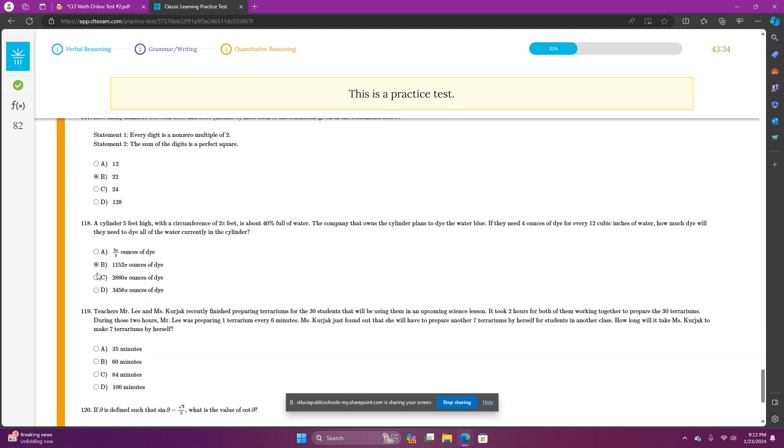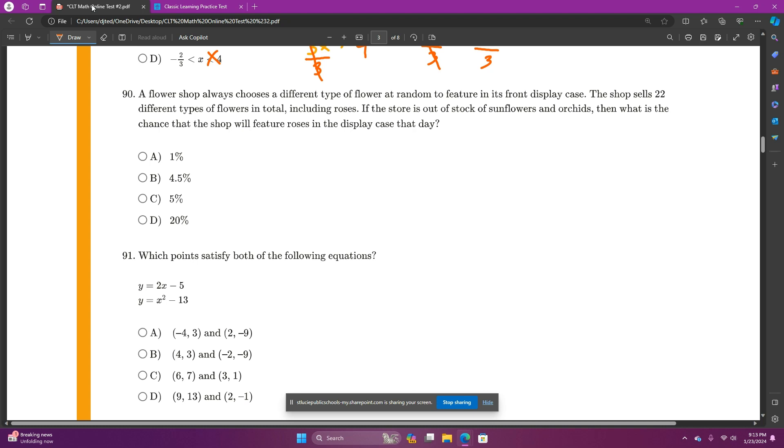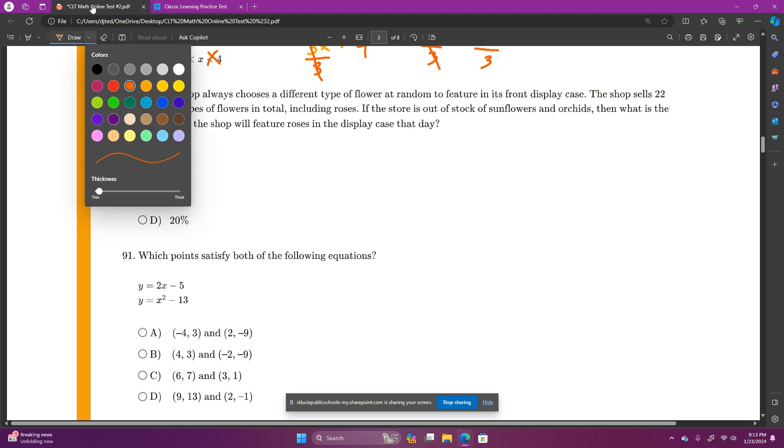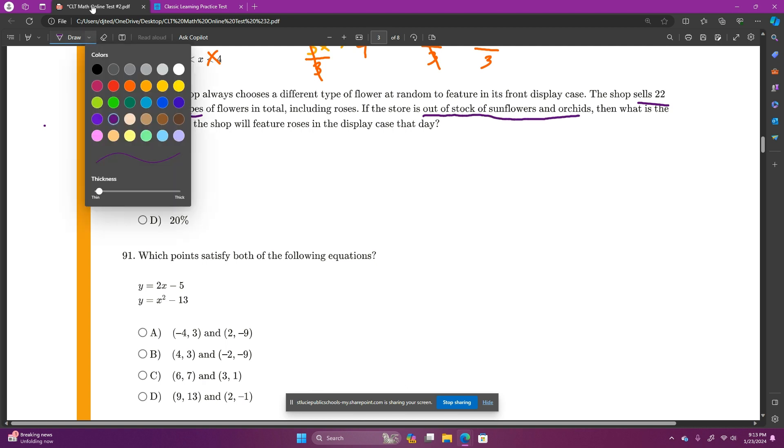That's enough lecture about that for now. And I got my letter of the day in. I'm just doing this so you see how much I'm stressing that that's important. I do not want you to leave any blank answers when you take your test on Saturday. All right. Number 90. A flower shop always chooses a different type of flower at random to feature in its front display case. The shop sells 22 different types of flowers in total, including roses. If the store is out of stock of sunflowers and orchids.